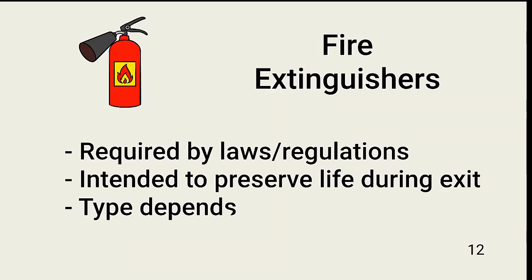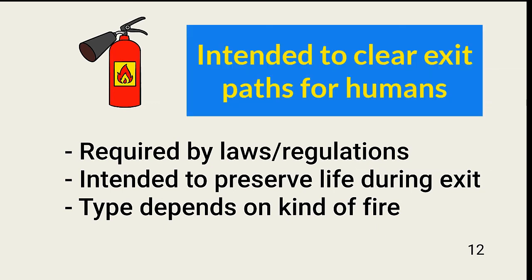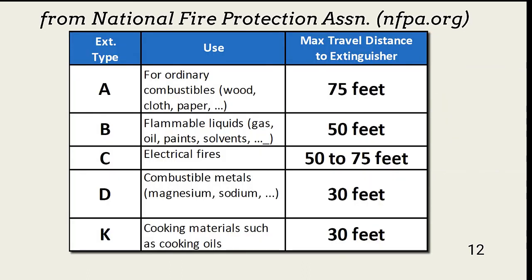Fire extinguishers in the workplace are governed by laws and regulations. They're not intended to put out fires, although they might work for small fires like those that start in someone's trash can. Instead, extinguishers are intended to clear paths for humans to exit areas threatened by fire or smoke. The type of extinguisher required and its placement is governed by established standards. This table shows the types of extinguishers and when they should be used, and the maximum distance a person should have to travel to each type. Type C extinguishers are type A or B extinguishers that are also rated for electrical fires.